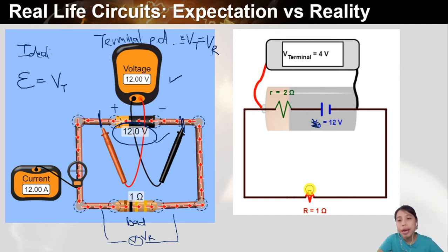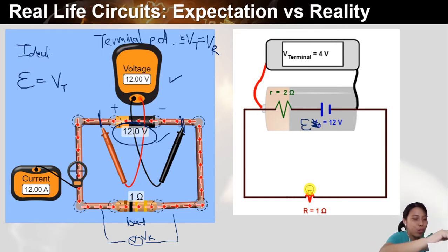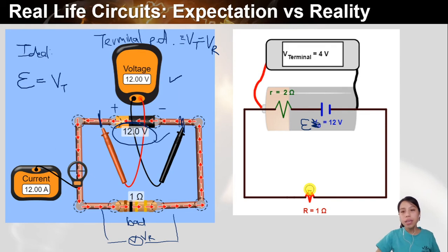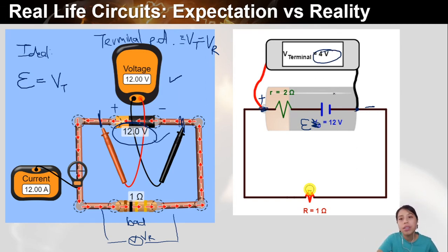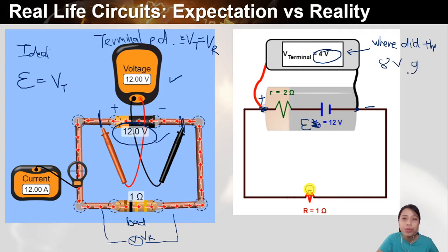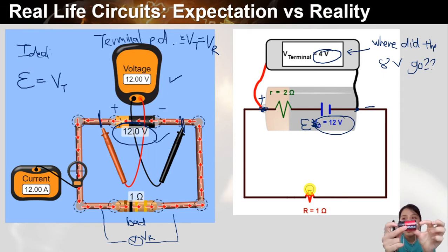Your battery EMF is 12 volts. But then you connect to the positive and negative terminal to measure the terminal potential difference — and it only comes out as 4 volts. So where did the 8 volts go? The battery can supply 12, but while you measure the ends of the battery, only 4 comes out. Where's the 8 volts?